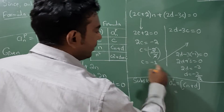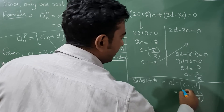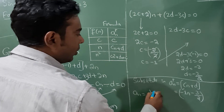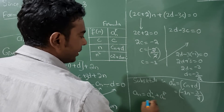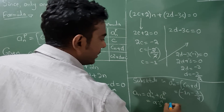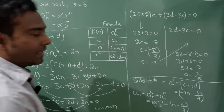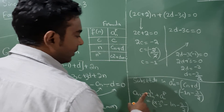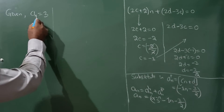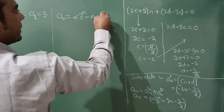Substituting the values c = −1 and d = −3/2 into the particular solution form cn + d gives aₙᵖ = −n − 3/2. Therefore the general solution is aₙ = α · 3ⁿ − n − 3/2. Now applying the initial condition a₁ = 3, substitute n = 1.